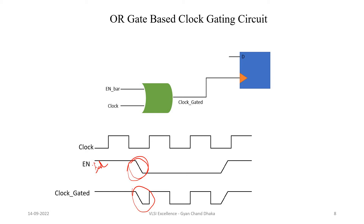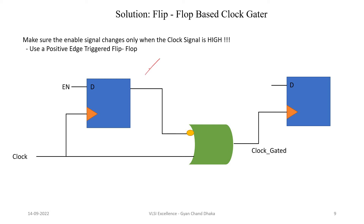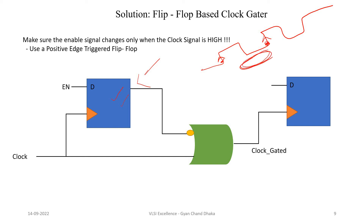Now let's see the solution for this problem. If we introduce a positive edge flip-flop, it will make sure that our enable signal only changes when the clock signal is high. This positive edge flip-flop is going to sample our enable signal at the rising edge only. During the time when the clock signal is low, our enable signal is never going to change — it will be either 1 or 0 as per the sampled value at the rising edge. This will ensure there are no glitches in our gated clock signal.